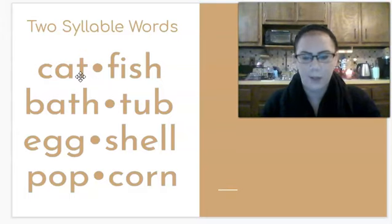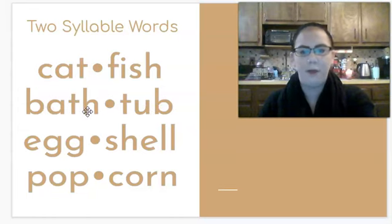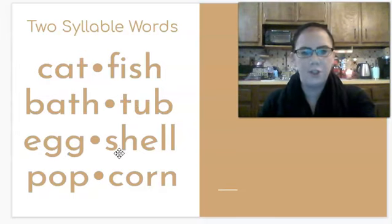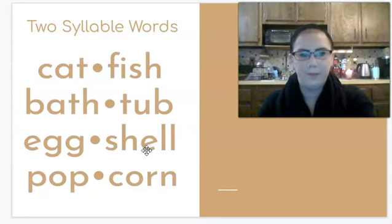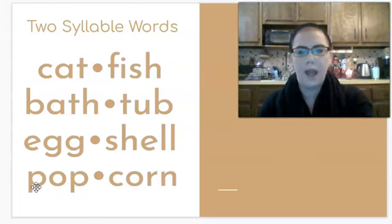Let's look at some other words that have chunks in them. Bathtub: b-a-th, bath, t-u-b, tub, bathtub. Eggshell: e-g, egg, sh-e-ll, shell, eggshell. Popcorn: p-a-p, pop, c-corn, corn, popcorn.